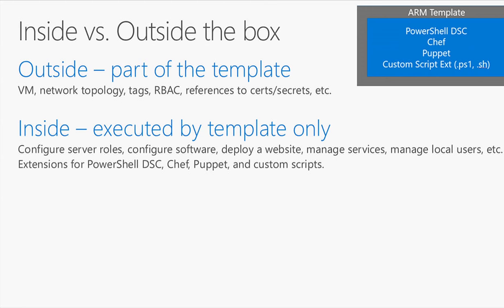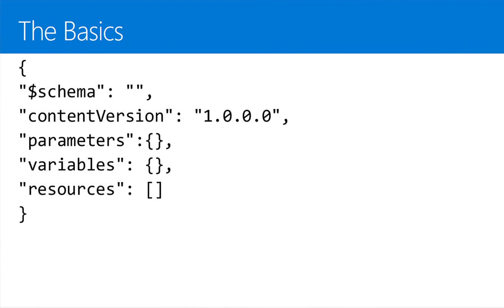So what do these templates look like? The basics of a template: the schema and content version at the top are pretty much the same on every single template. The things that get more interesting are the parameters, variables, and resources — that's the basic structure of an ARM template.